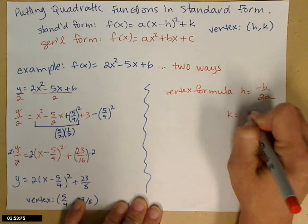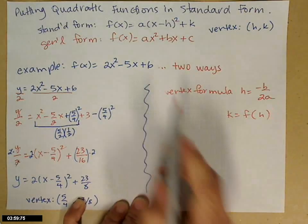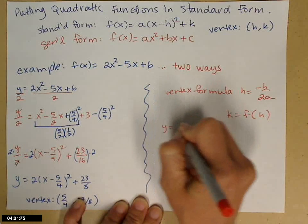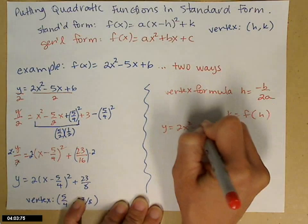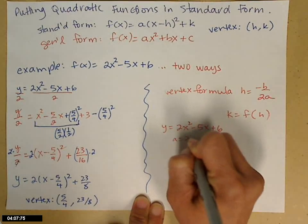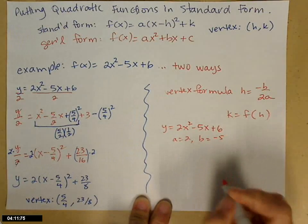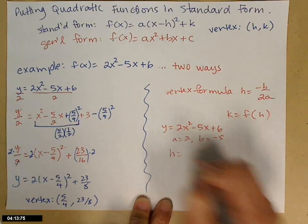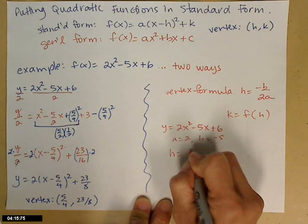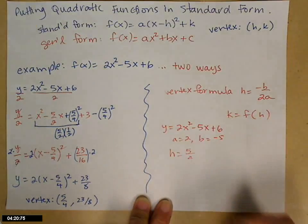Then I get k by evaluating my function at whatever I get for h. So let's go ahead and look at our same function. y equals 2x squared minus 5x plus 6. a is 2 and b is negative 5. So that h is equal to negative b, so the opposite of b, so 5 over 2a. So that'll be 4. Now I know what h is.